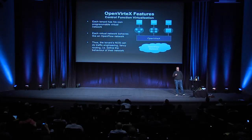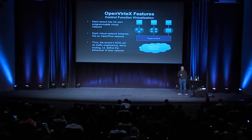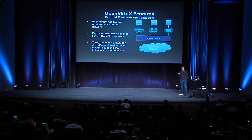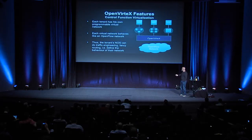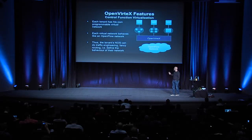OVX can spawn a virtual network with any topology you want and provide any addressing you want. How do we allow you to program that virtual network? Each of these virtual networks behaves just like an OpenFlow network, so you can stick your favorite controller on top of it — whether it's OpenDaylight, Floodlight, or whatever you want — and program your network. You can do fancy things like custom routing, traffic engineering, whatever you want.